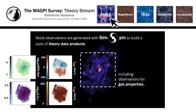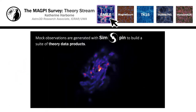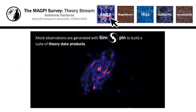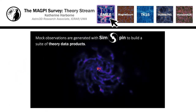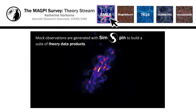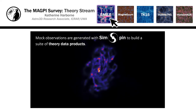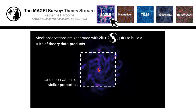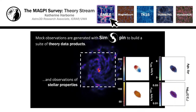This will include projected gas property maps, such as star formation rates and metallicities. We'll also be generating the projected stellar properties, both in mass and luminosity-weighted formats.